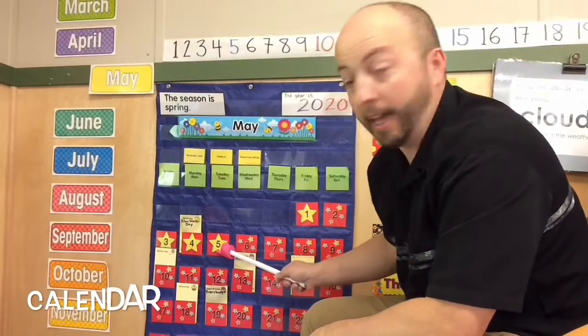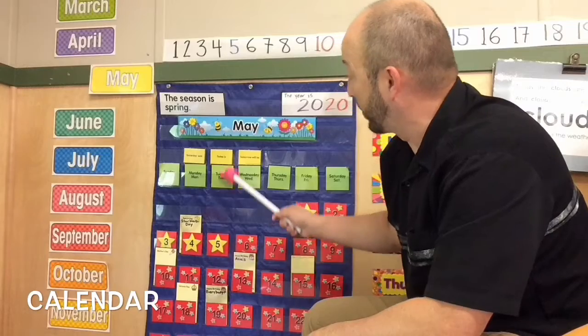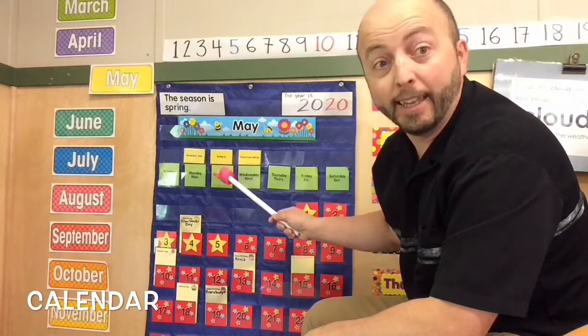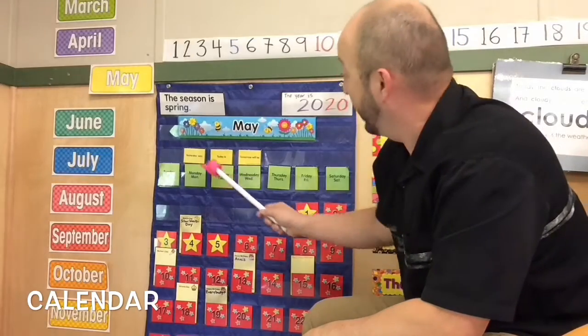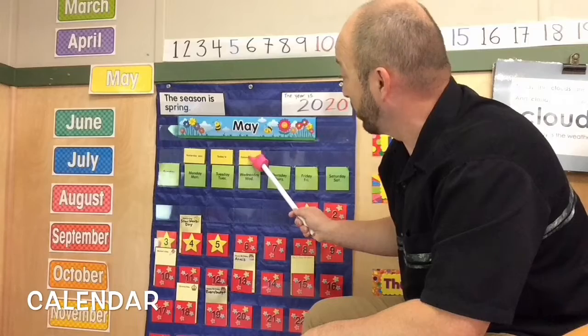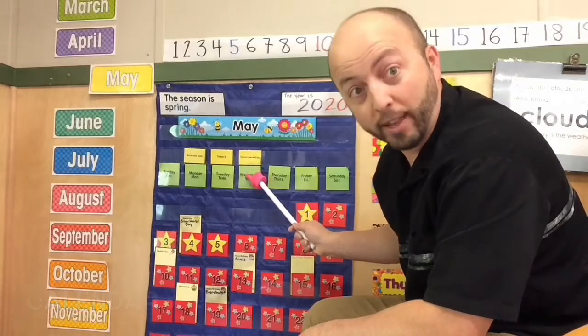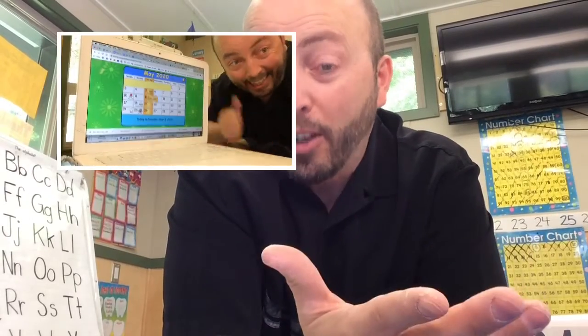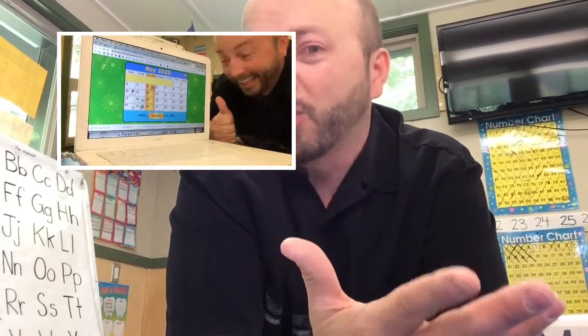Just a reminder, do the calendar today. Remember to elevator up. Today is Tuesday, yesterday was Monday, and tomorrow will be Wednesday. I put a link on the blog that will take you to a calendar on Starfall, and it'll help you do it. So try that — it might be kind of fun.